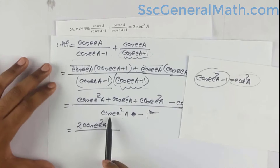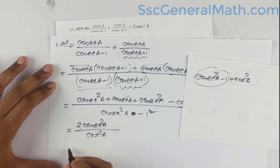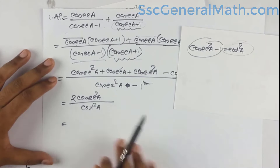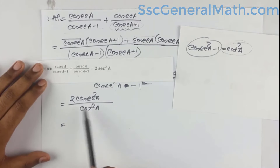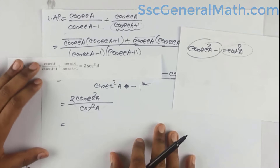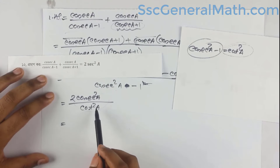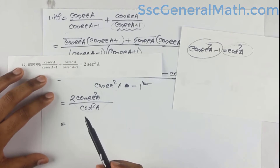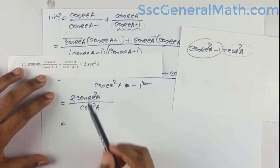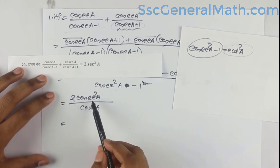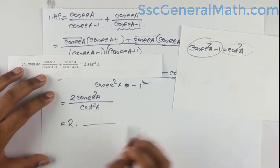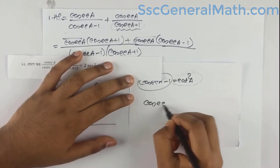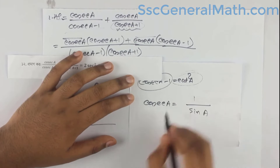Using cosec squared a minus 1 equals cot squared a, we simplify. This gives us cosec squared a over cot squared a. Converting: cosec(a) is 1/sin(a) and cot(a) is cos(a)/sin(a), so cosec squared a divided by cot squared a equals 1 divided by cos squared a.